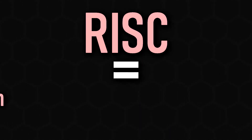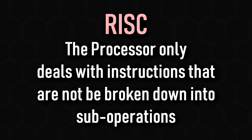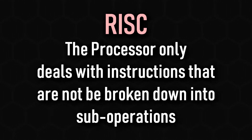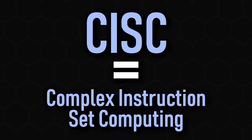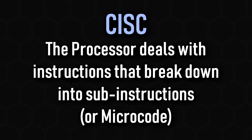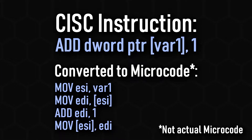RISC stands for Reduced Instruction Set Computing, where the processor only deals with and interprets instructions that serve one purpose. Meanwhile, CISC stands for Complex Instruction Set Computing, where the instructions the processor deals with don't usually serve one purpose but instead break down into multiple simpler instructions known as microcode.